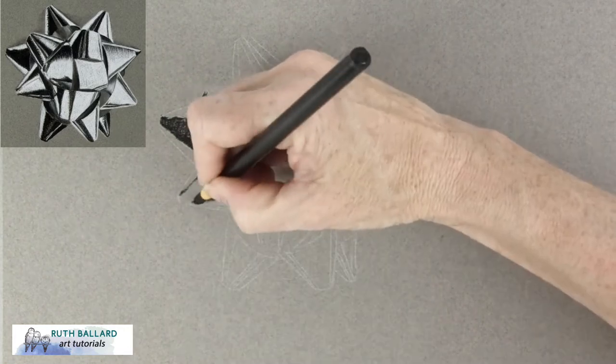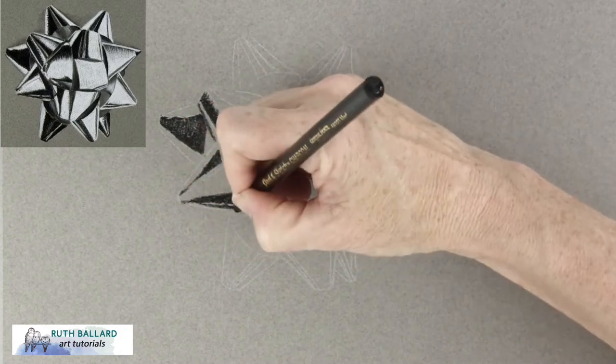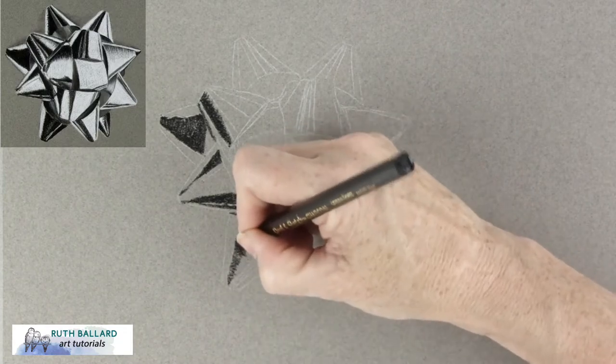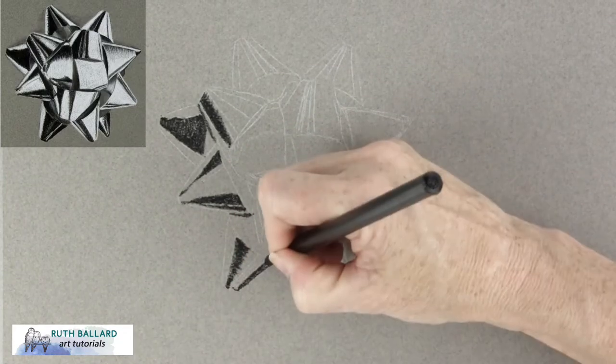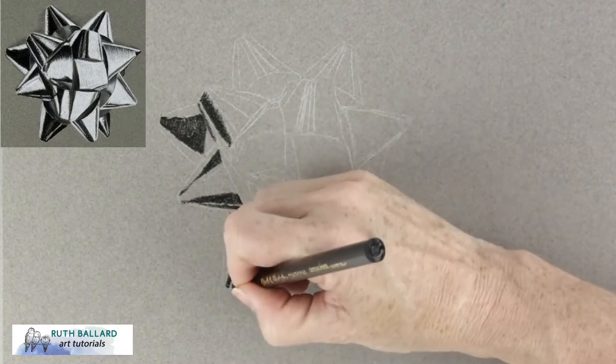I'm right-handed so working from the top left to the bottom right worked for me and obviously you'd work in the opposite direction if you're left-handed. It's not all that easy to erase charcoal and I really wanted to keep my background free of smudges.